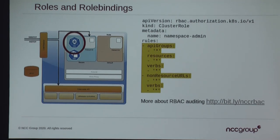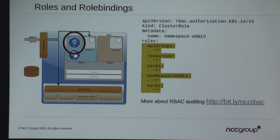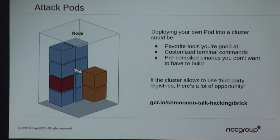All these controls are set by a role and a role binding. Our role looks like: star, star, star, star — we can do anything within the context of the secure namespace. So the group in Singapore has access to their own namespace and has created a service token that can do whatever it wants within that namespace. But theoretically, whatever they're doing in Singapore shouldn't affect what's happening in Canada. RBAC and RBAC auditing is its own subject — there's a link to a blog post if you're interested in further tools to audit that.